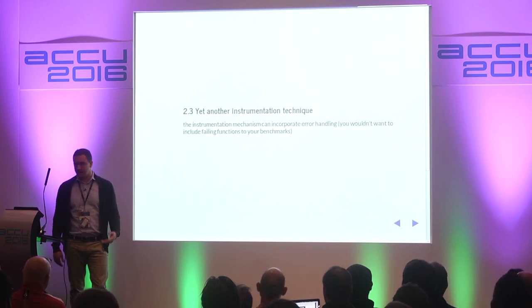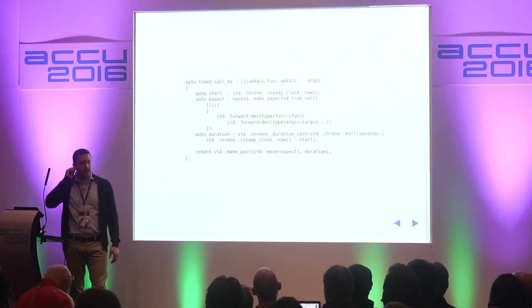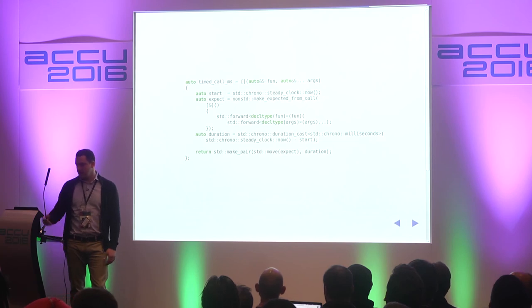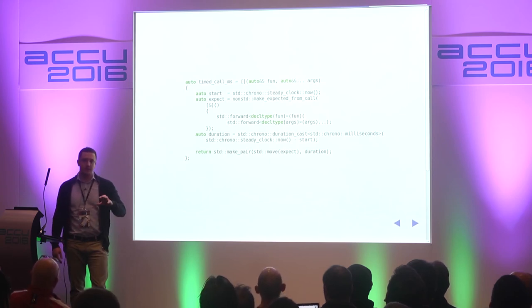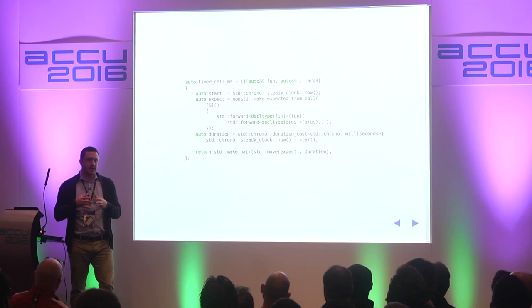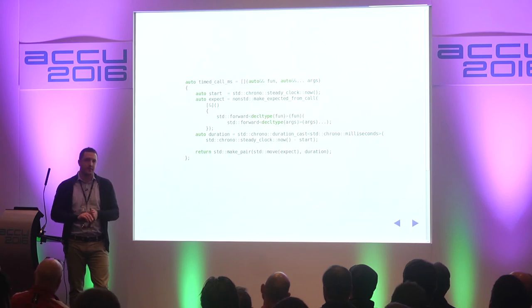There are more instrumentation techniques. I like to use lambdas for this type of work. It's a good idea to incorporate error handling, because you wouldn't want a failing function to corrupt your measurements. Here we see a C++14 generic lambda where auto&&  is a forward reference to the function being called, and the arguments are handled the same way. We use the expected<T> type — introduced by Alexandrescu around 2009 or 2012, with the implementation here by Martin Moene. expected<T> encapsulates either a value of type T or an exception. A good side effect is that it can also encapsulate a void return type.